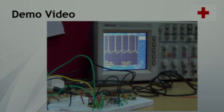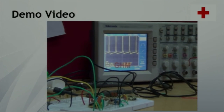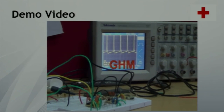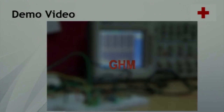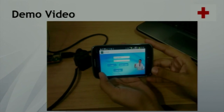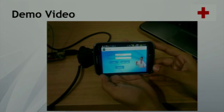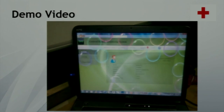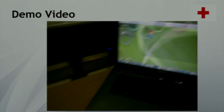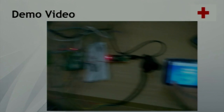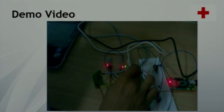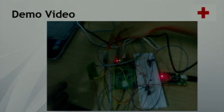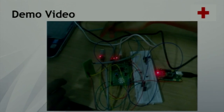Let's move to the demo. This is the demo for GHM — the General Health Monitor system. This is the Android UI, and this is the UI for the web application. We will now log in. The connection is through Bluetooth, and once the Bluetooth icon stops moving, it shows that the connection is established.